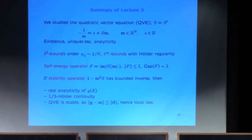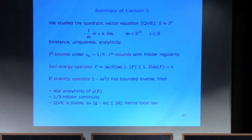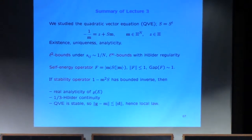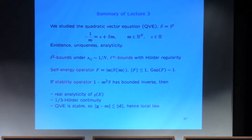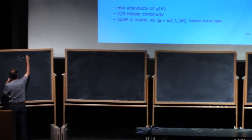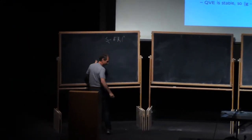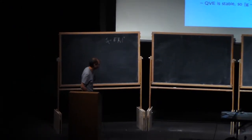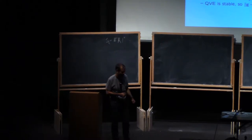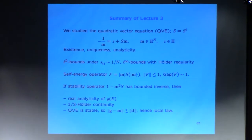What we discussed last time is that we studied this quadratic vector equation, QVE, which has an input matrix S. In the application, S_ij played the role of the variance matrix of the random matrix, but for this discussion you don't even have to know that it comes from a random matrix — we can study this equation in itself.